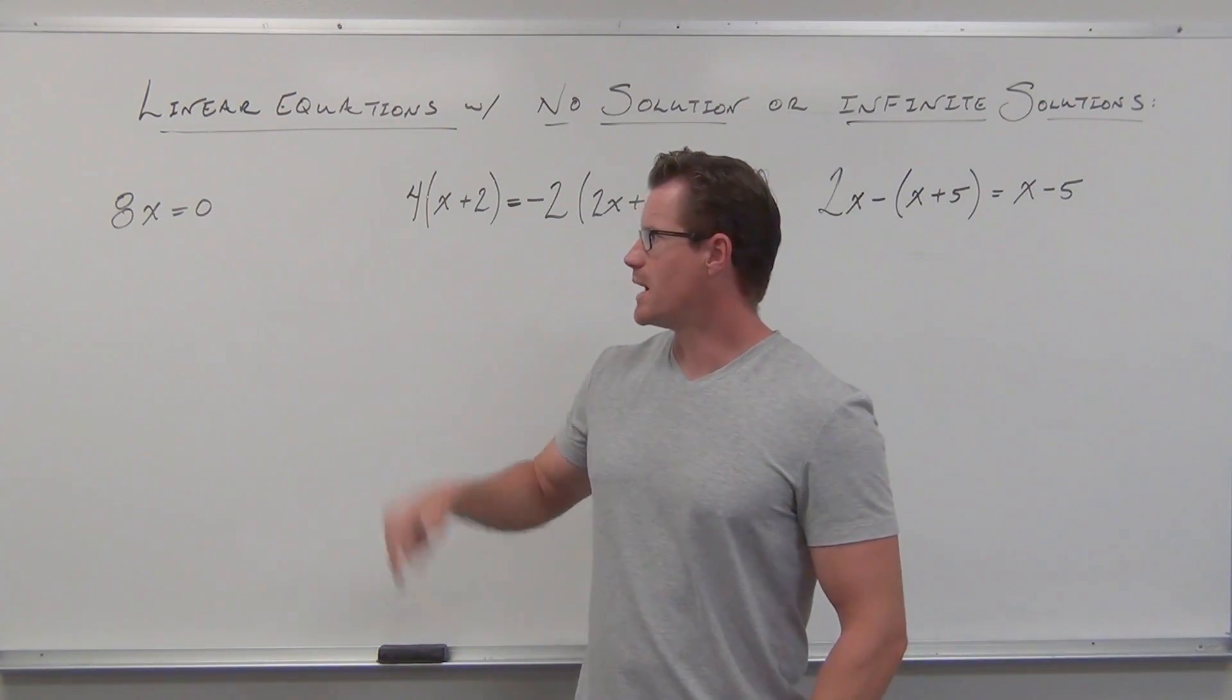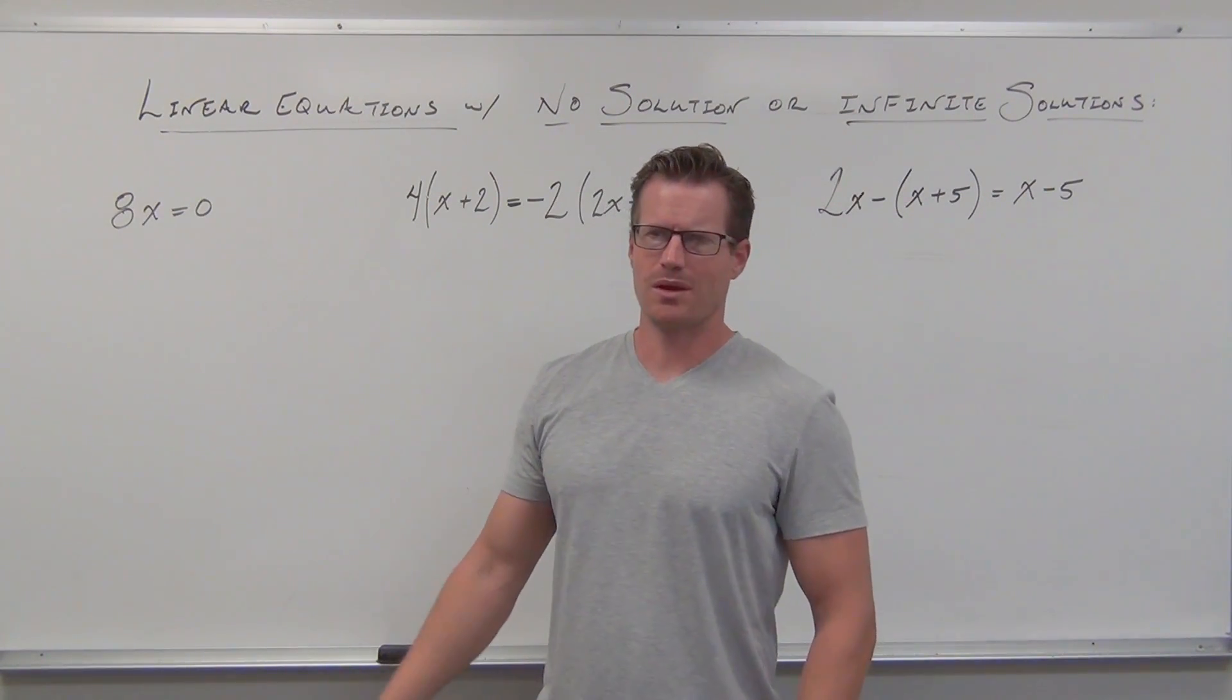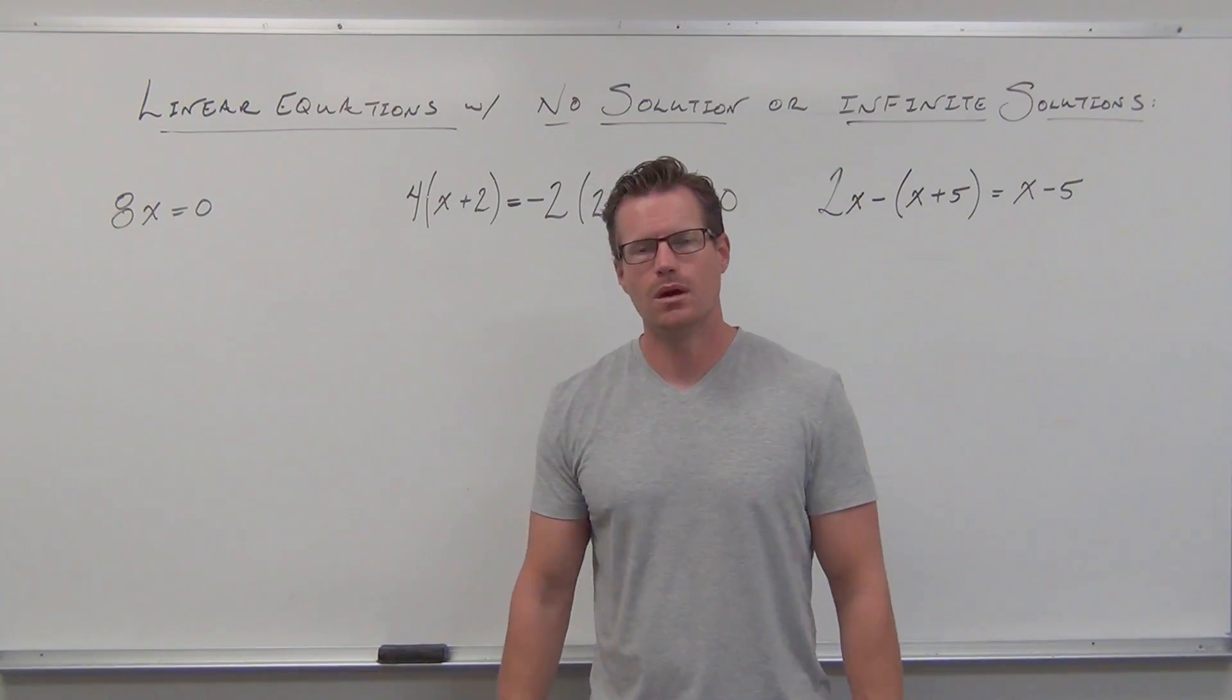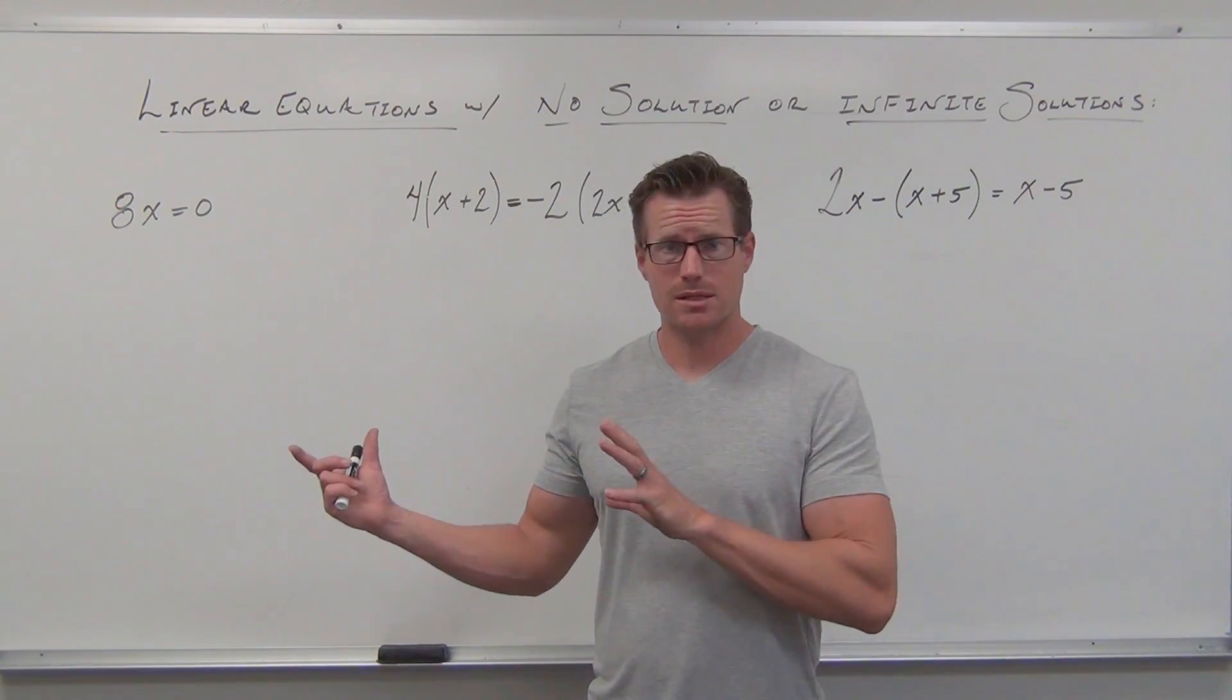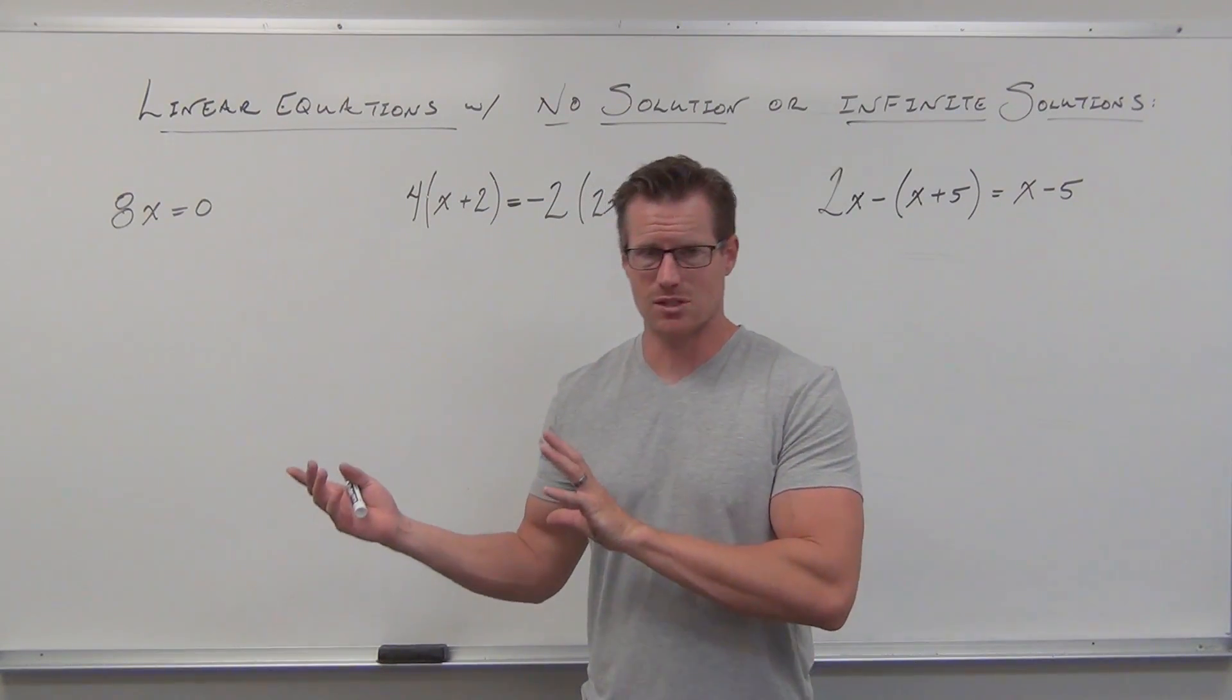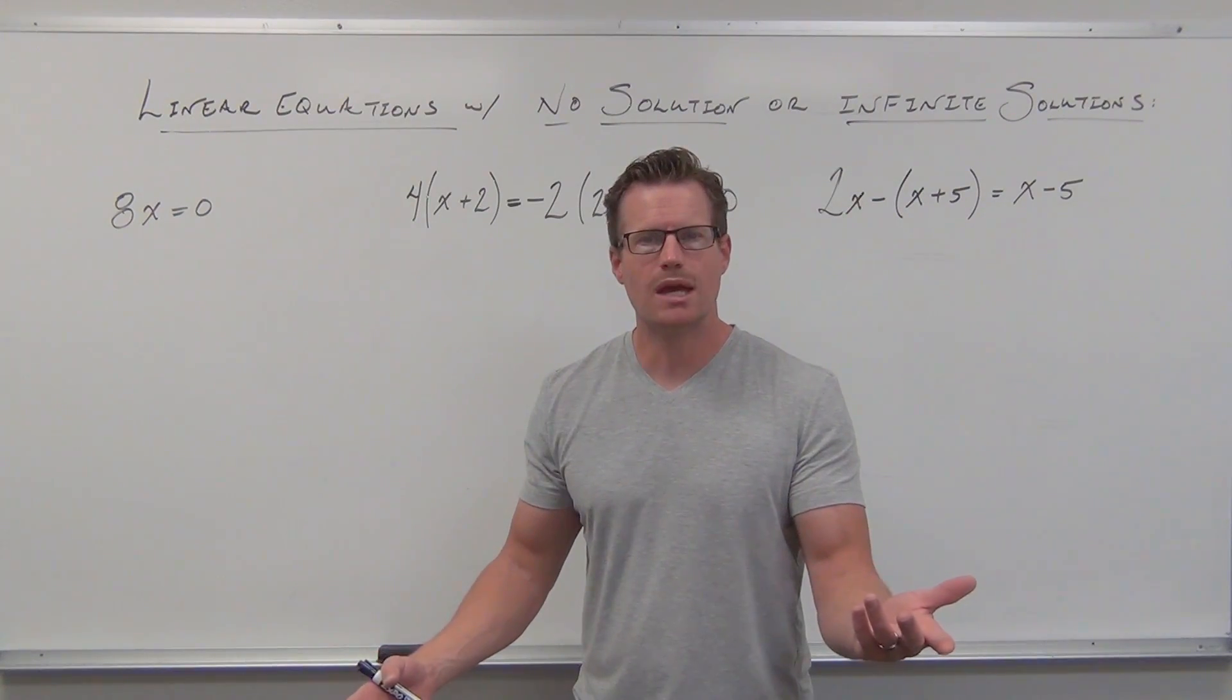A lot of students will look at that and go, that's not possible. You can't have 8x equals zero. What would you plug in to multiply by 8 to get zero? What would you multiply by 8 to get zero? Zero.